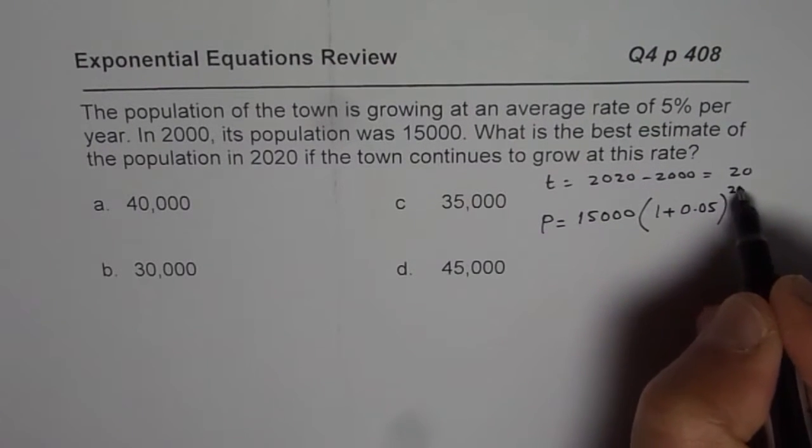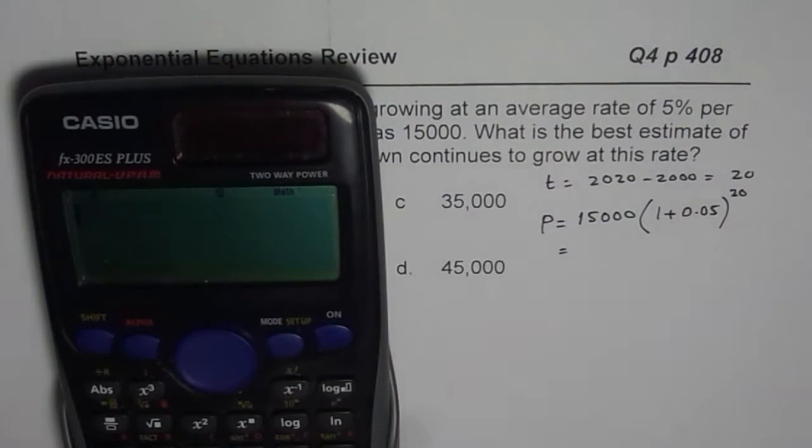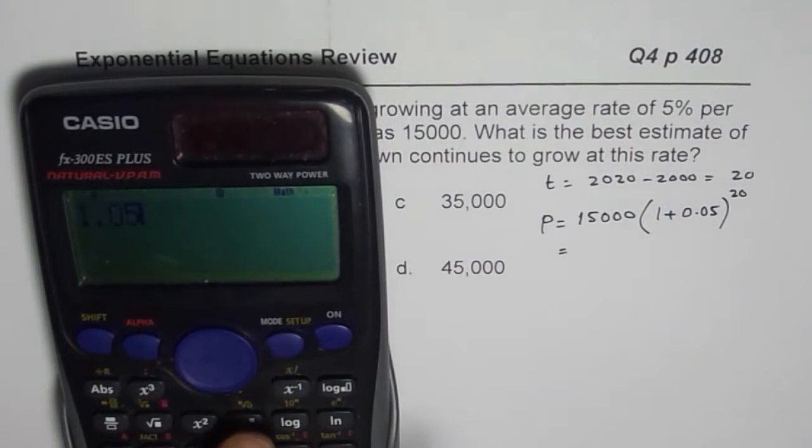So, that is the expected population. Let us use the calculator, find the answer. So, we have 1.05 to the power of 20, equals to, times 15,000, equals to.